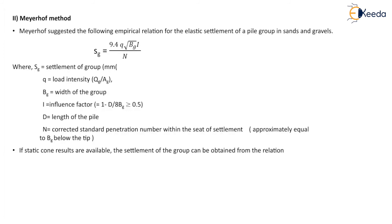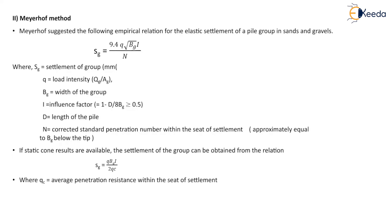If static cone results are available, the settlement of the group can be obtained from the relation: SG = Q × BG × I / (2QC), where QC is the average penetration resistance within the seat of the settlement.